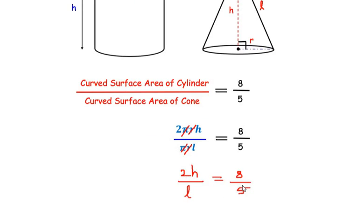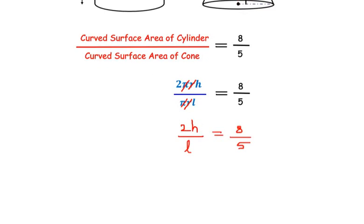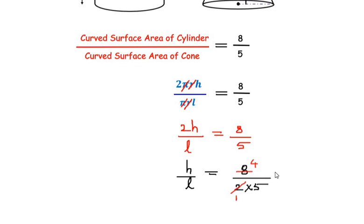Taking 2 to the other side of the equation, we get h/l = 8/(2×5). Since 2 divides 8 four times, we get h/l = 4/5.